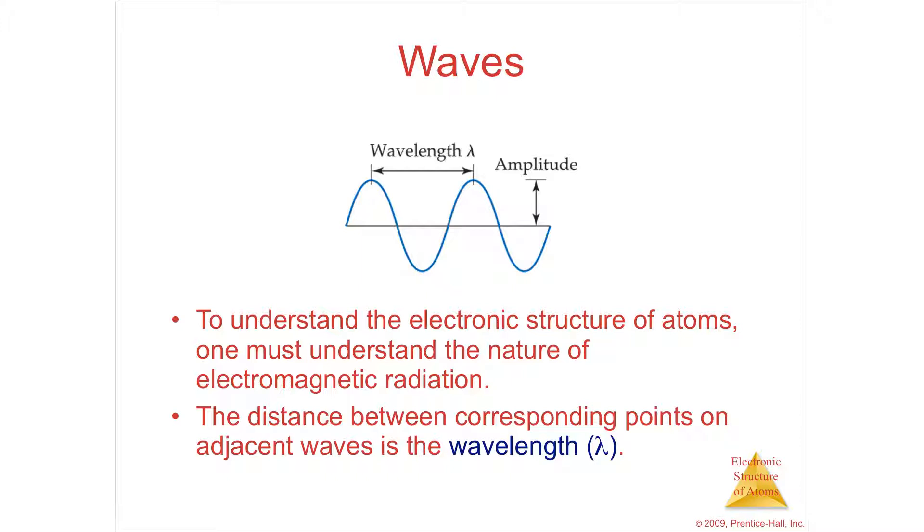So ultimately, we're going to be studying the electronic structure of an atom, which is its arrangement of electrons. So we have to first understand light, knowing that it came from electrons and then light plays with electrons once it gets to somewhere where there is matter.